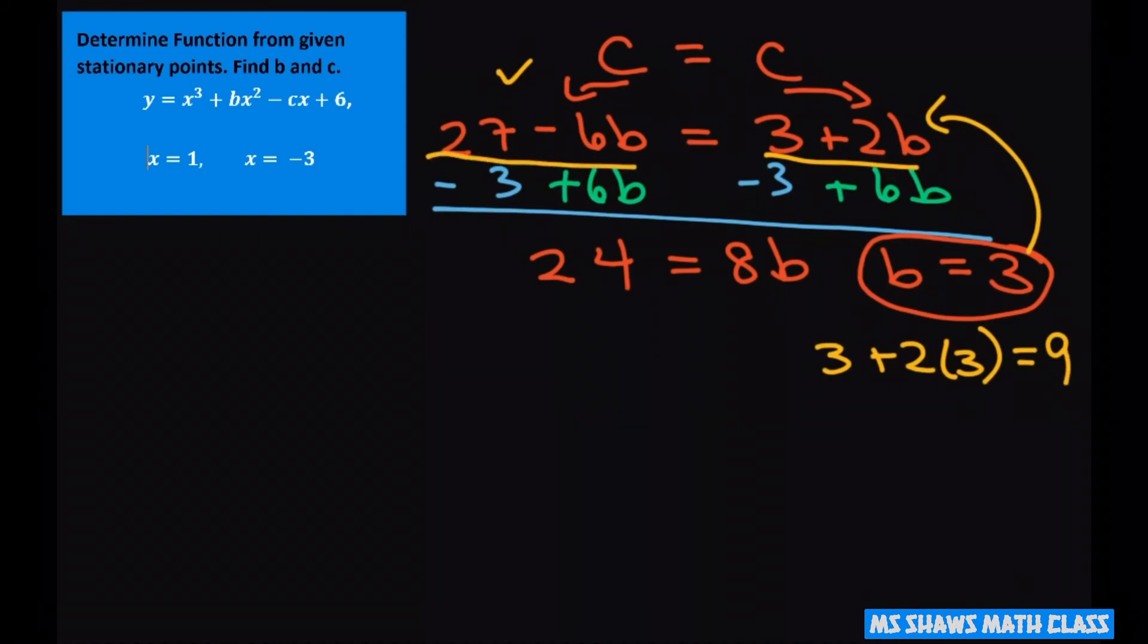You could also do this one, 27 minus 6 times 3. That also gives you 9. So c equals 9.